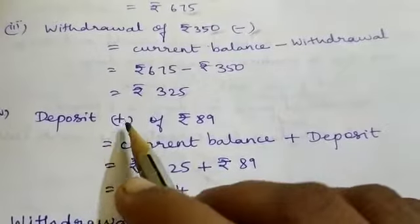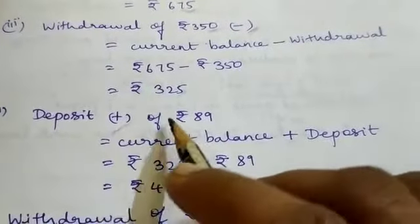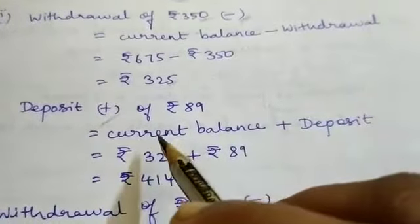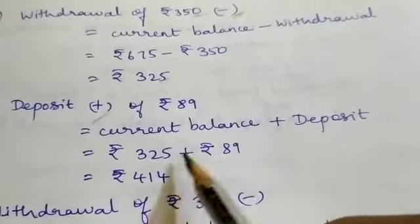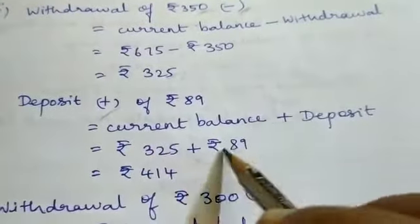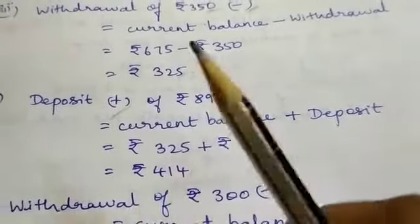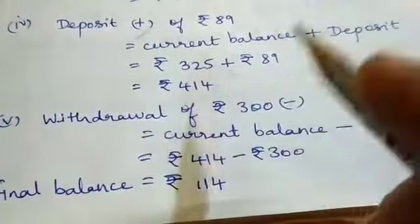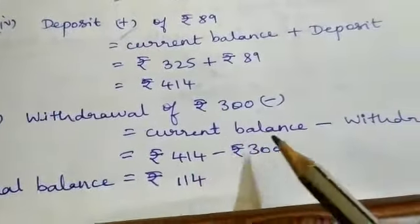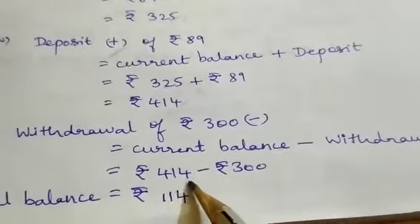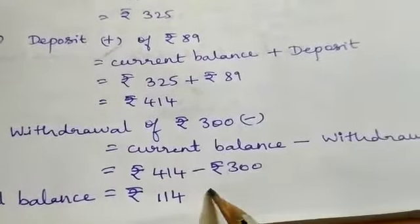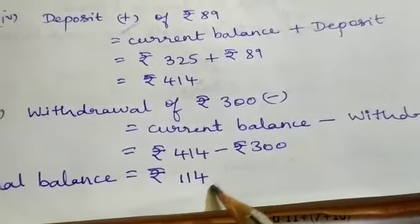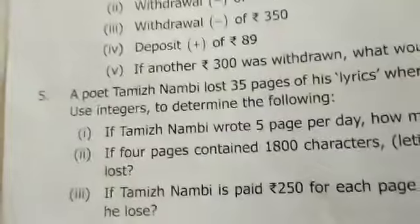Deposit means positive — plus Rs. 89. Current balance plus deposit: 325 plus 89 equals Rs. 414. Next: withdrawal of Rs. 300. Current balance minus withdrawal: 414 minus 300. Final balance equals Rs. 114.